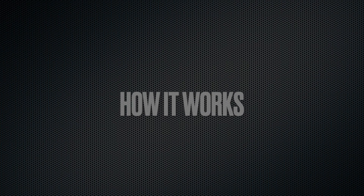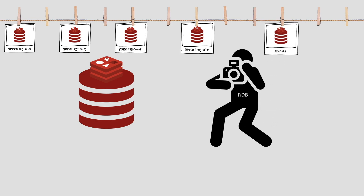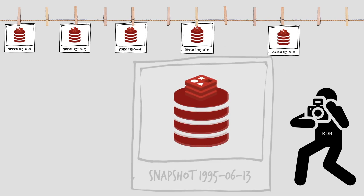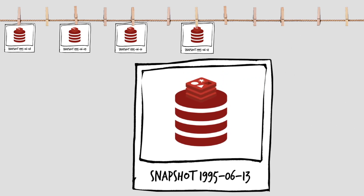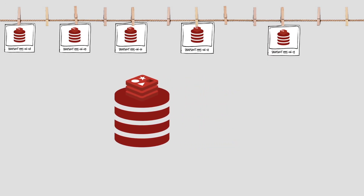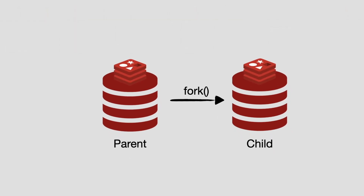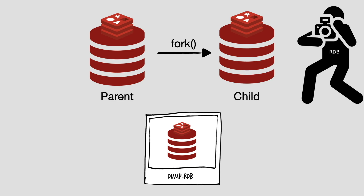How does it work? These snapshots work like a time machine. You can take as many snapshots as you wish, as frequently as you wish, and keep them for as long as you wish. You can then use these snapshots to restore the database to any point in time in case of disasters. By default, Redis stores these snapshots in a binary file named dump.rdb, and this RDB file is replaced whenever a new snapshot is created. Redis takes snapshots by forking its process into a parent and a child process; the child process writes the new RDB file and then replaces the old one.